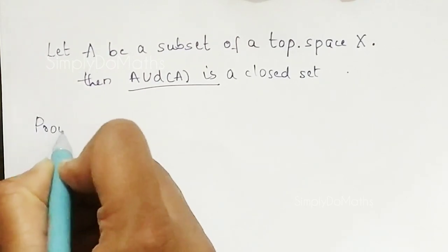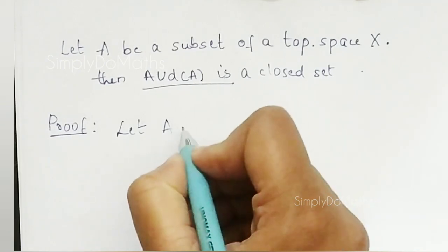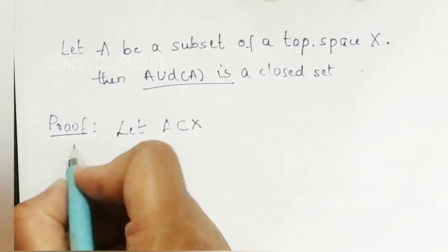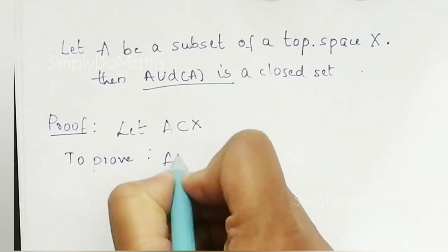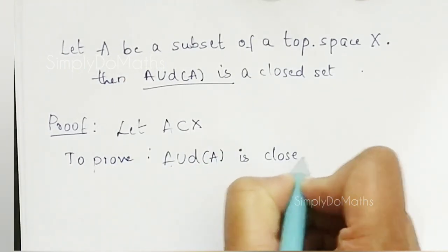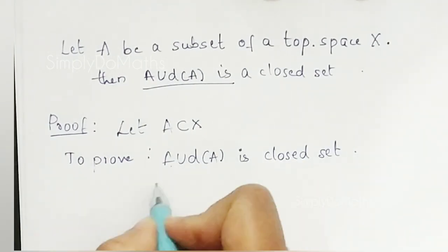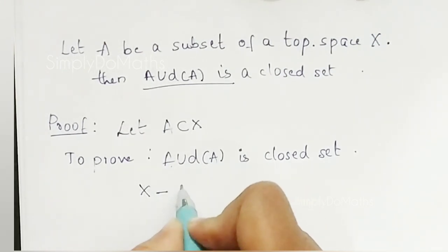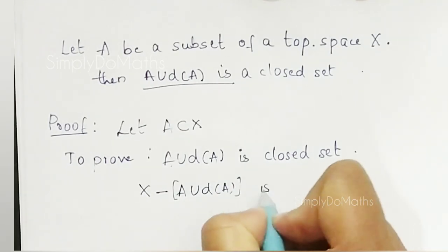Let us go with the proof. Let capital A be any subset of a topological space capital X. To prove A union the derived set of A is a closed set, we need to prove its complement — that is, X minus A union the derived set of A — is open.